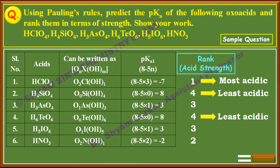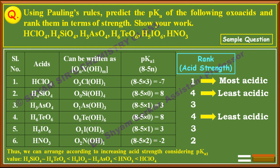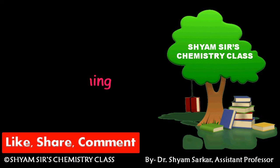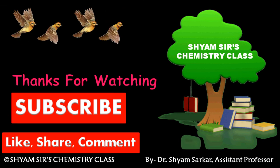Arranging in order of increasing acid strength: H₄SiO₄ ≈ H₆TeO₆ < H₅IO₆ ≈ H₃AsO₄ < HNO₃ < HClO₄. So HClO₄ is most acidic and H₄SiO₄ and H₆TeO₆ are least acidic. This is a very simple calculation. If you watch my previous video and this video, you will be able to solve any problem related to relative acid strength of oxoacids using Pauling's rule. Thank you for watching and please subscribe to my channel.